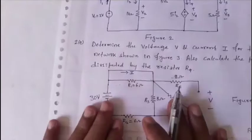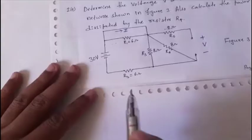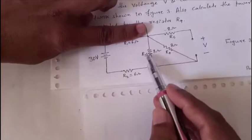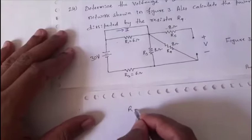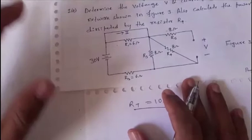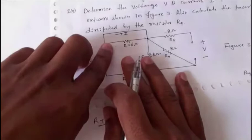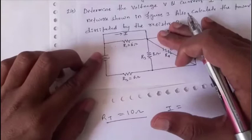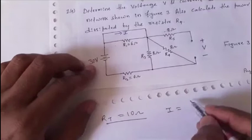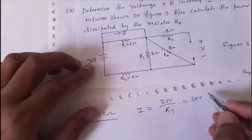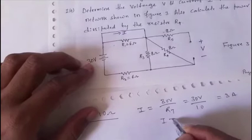With r1 shorted and r5 open, the two 8 Ω resistors are in parallel, giving 4 Ω. In series with 6 Ω, rt = 4 + 6 = 10 Ω. Therefore i = 30 V / 10 Ω = 3 A.